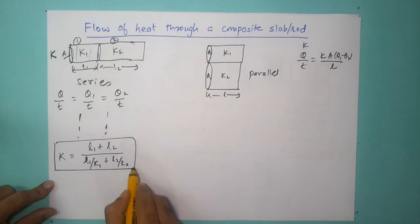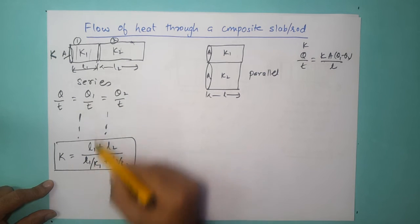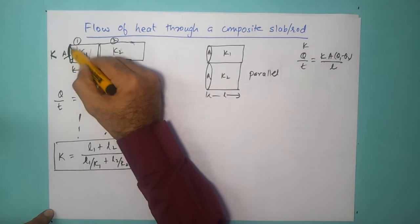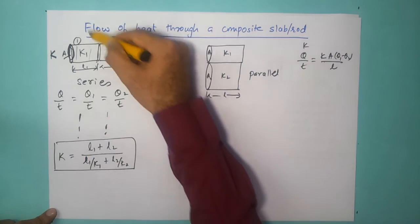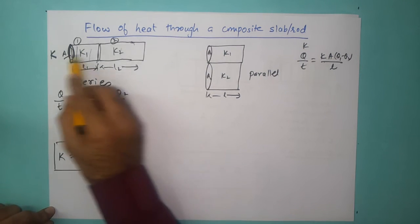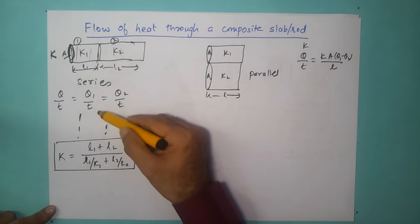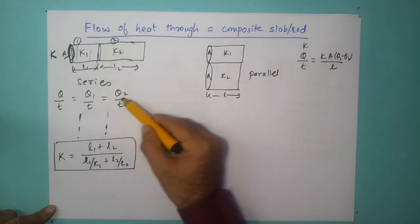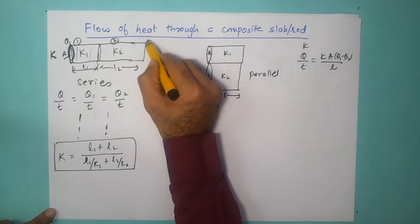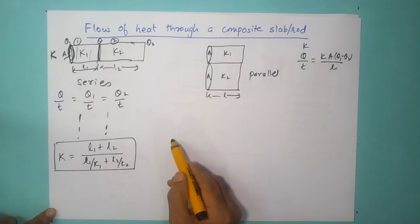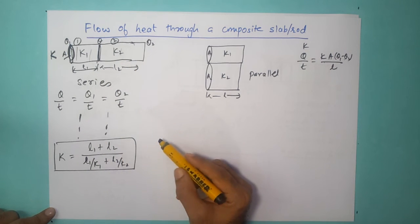The equivalent thermal conductivity for the series composite rod turns out to be: K = (L1 + L2) / (L1/K1 + L2/K2). This is the key equation relating equivalent thermal conductivity to the lengths and conductivities of the two rods. We have assumed constant cross-sectional area throughout. If cross-sectional areas were different, the calculation would become quite complex. I would encourage you to try this derivation yourself using Q1 by T and Q2 by T, with temperatures theta 1 at one end, theta at the joint, and theta 2 at the other end.